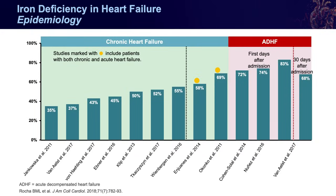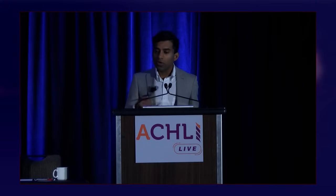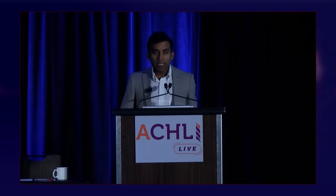Across a variety of clinical studies over the last decade, iron deficiency in chronic heart failure ranges from 35 to 70 percent. In the acute setting — ADHF, acute decompensated heart failure — iron deficiency is often the rule rather than the exception, occurring in about 70 to 80 percent of hospitalized patients. This persists in the early post-discharge window, identifying a high-risk cohort for both clinical progression and iron deficiency.